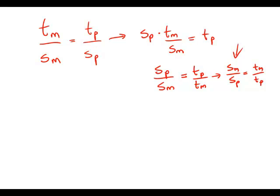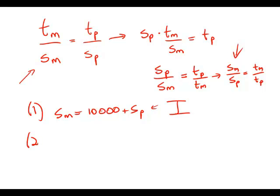Now let's move on to the statements. Statement number one, there are 10,000 more students in School District M than in School District P. So students in M equals 10,000 plus students in P. Essentially what we have here are four unknowns, and what we're given here is one equation. So one equation for four unknowns, that's definitely insufficient.